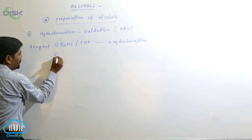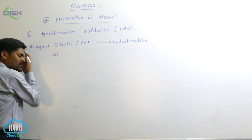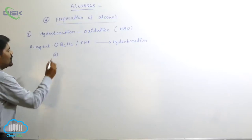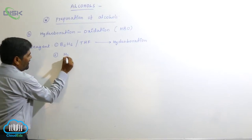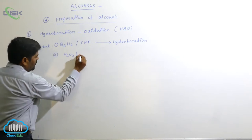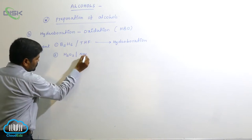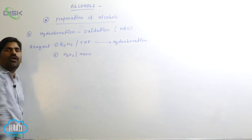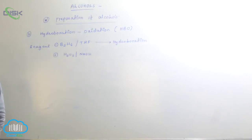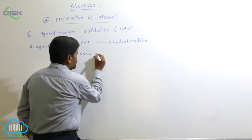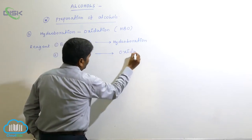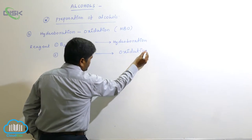The second step is oxidation, which takes place in basic medium. The reagent is hydrogen peroxide, H2O2, in the presence of a basic medium — sodium hydroxide or any base, OH⁻. This particular step is known as the oxidation step.